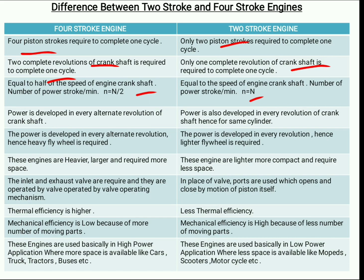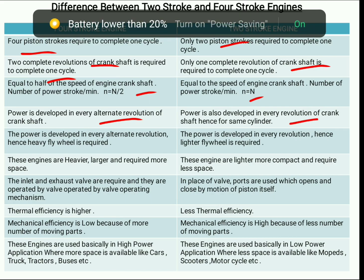In 4 stroke engines, power is developed in every alternate revolution of the crankshaft, whereas in 2 stroke engines, power is developed in every revolution of the crankshaft.